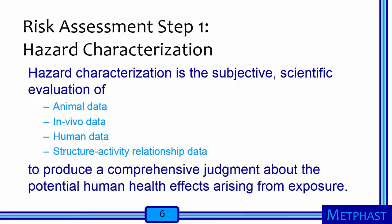Let us get started with the first step in risk assessment, namely hazard characterization. Hazard characterization is the subjective scientific evaluation of animal data, in vivo data, human data, and structure activity relationship data to produce a comprehensive judgment about the potential human health effects arising from exposure. We will discuss each of these different types of data in more detail soon.